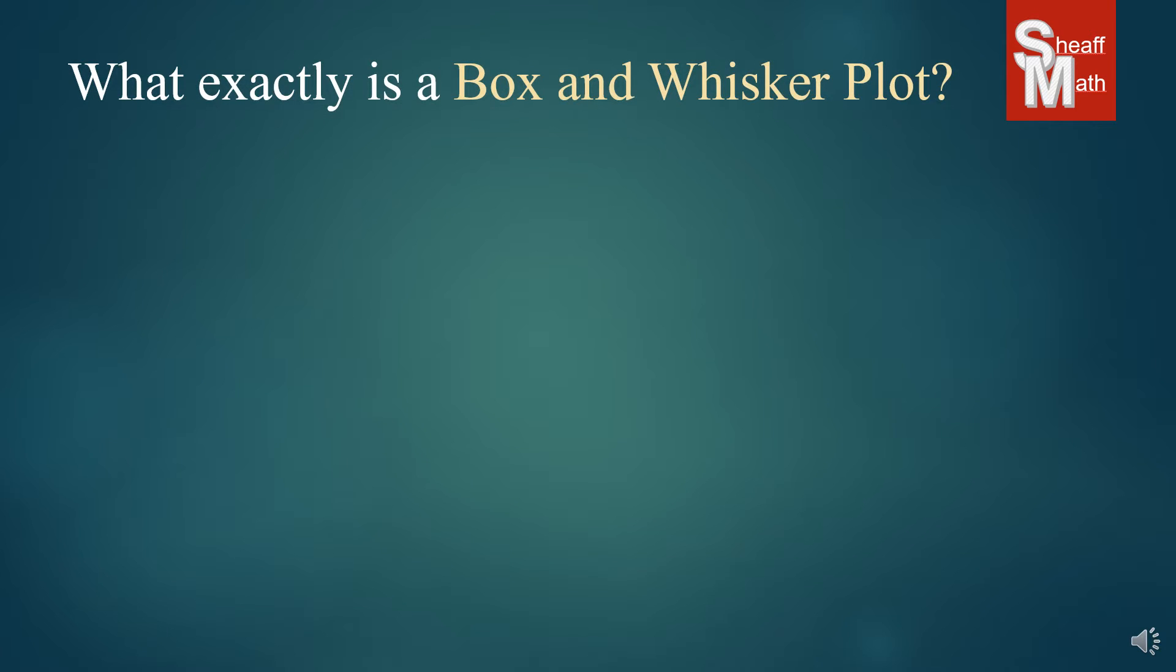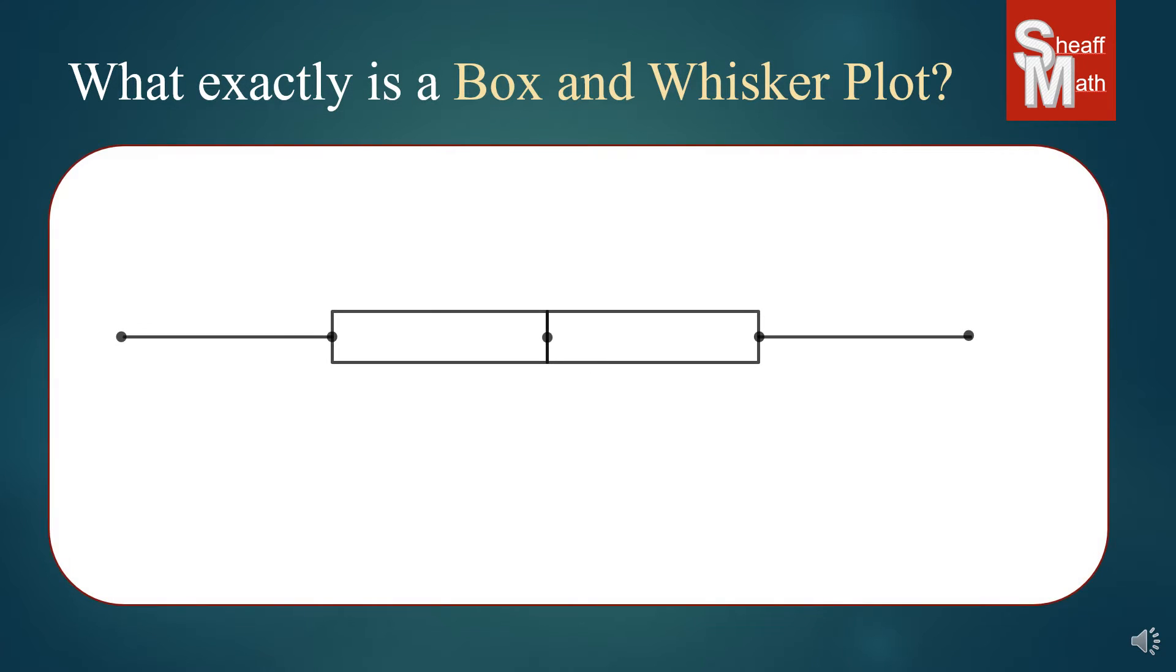Now what exactly is a box and whisker plot? Well this is an example of a random box and whisker plot. We call it the box and whisker plot because there's a box in the middle and it has two little lines at the end that look like whiskers.